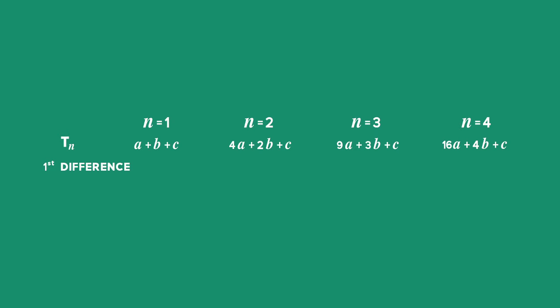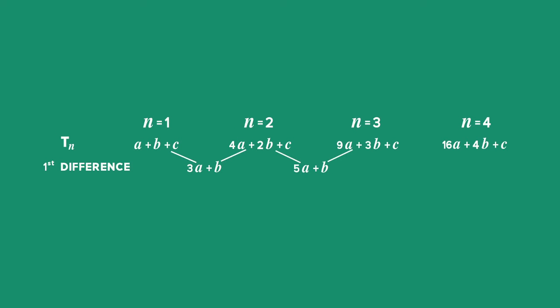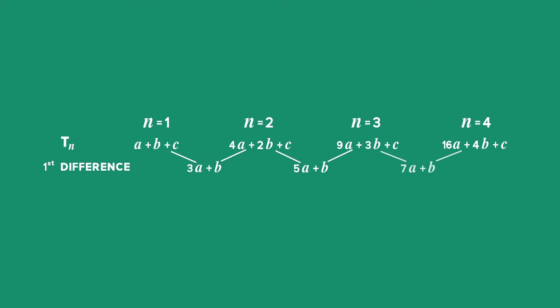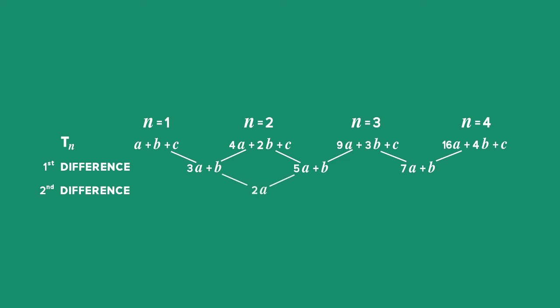We can find the first difference between the terms by saying term 2 minus term 1. We see that term 2 minus term 1 gives a first difference of 3a + b. Then to get the next consecutive difference, it's term 3 minus term 2, which gives 5a + b. And term 4 minus term 3 gives 7a + b. We then find the second difference by taking 5a + b subtract 3a + b, which gives a value of 2a.